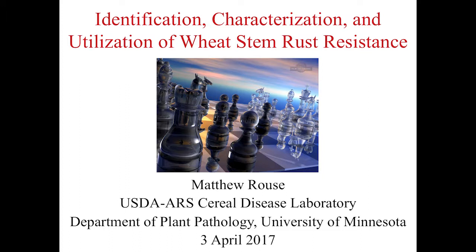Starting with an introduction to wheat, stem rust, and UG99: this map shows where wheat is grown in the United States. The red areas are where wheat is grown every single year in the same field, orange maybe every other year, and yellow occasionally. Wheat is grown all around the United States, but there are really three major areas.